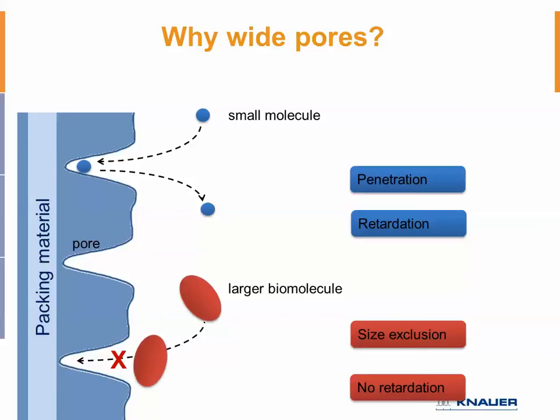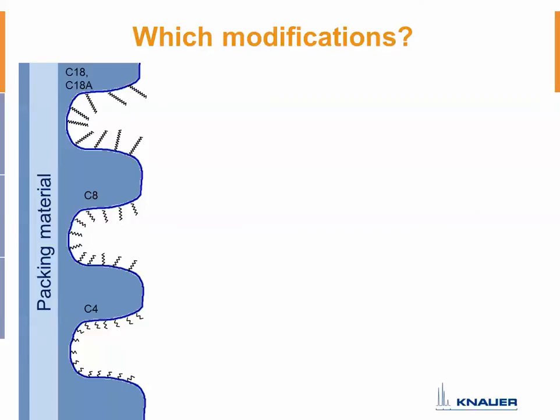This is why you need wide pores. But which modification do you use? We typically use different reversed-phase modifications for the analysis of peptides and proteins, related to the size of the molecules being analyzed. The breaking point is 2,000 Daltons. If molecules are smaller than 2,000 Daltons, you can still use classical silica gels with small pores. For molecules between 2,000 and 5,000 Daltons, we recommend a C18 modification of the 300 angstrom pore material — here you have perfect access to the pores and these molecules are well separated.